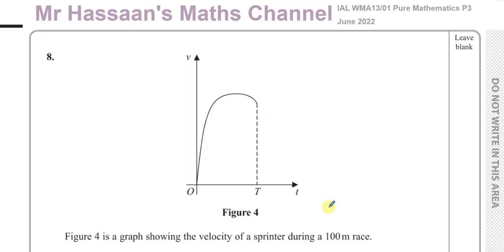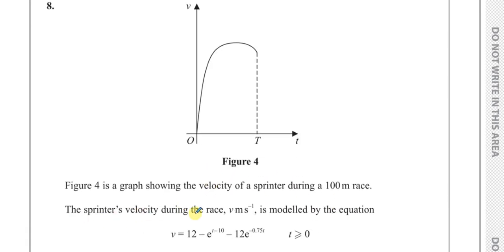This question here is about a velocity-time graph of a sprinter during a 100m race. The sprinter's velocity during the race v meters per second is modeled by this equation: v equals 12 minus e to the power of t minus 10 minus 12e to the power of negative 0.75t, where t is greater than or equal to 0, of course, it's time.